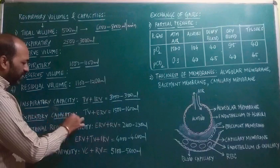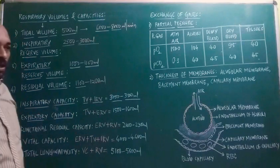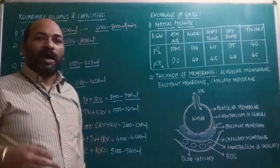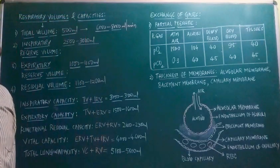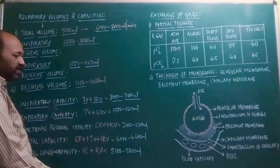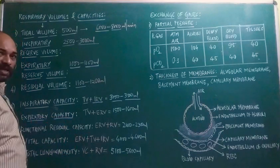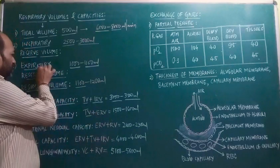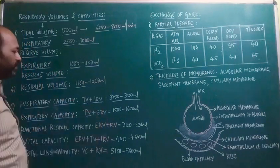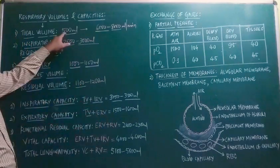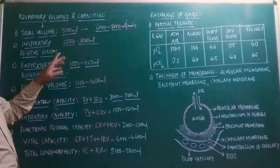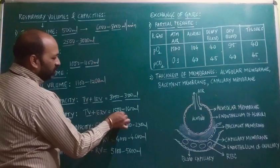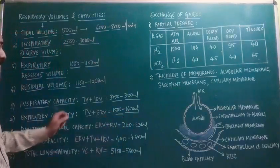Expiratory capacity is the total volume of air a person can expire after a normal inspiration. It is the addition of tidal volume plus expiratory reserve volume. Tidal volume is 500 ml and ERV is 1,000 to 1,100 ml, giving expiratory capacity of around 1,500 to 1,600 ml.